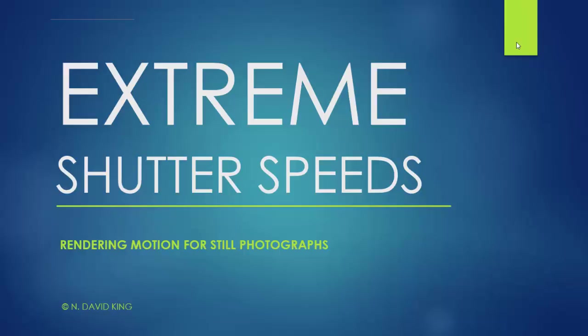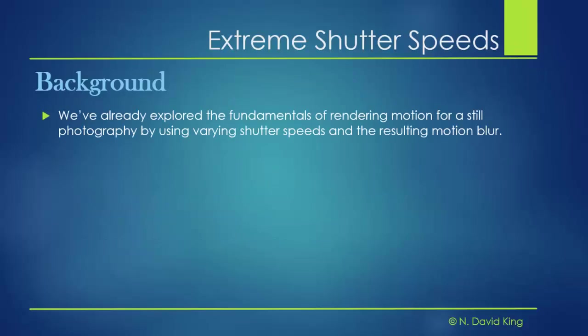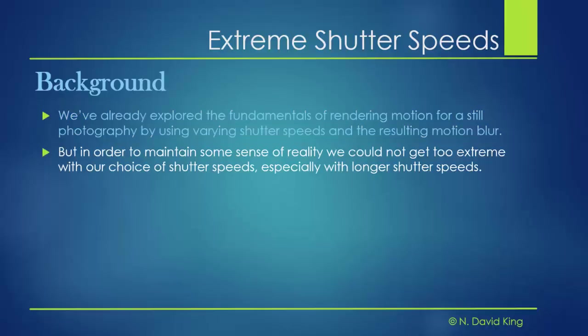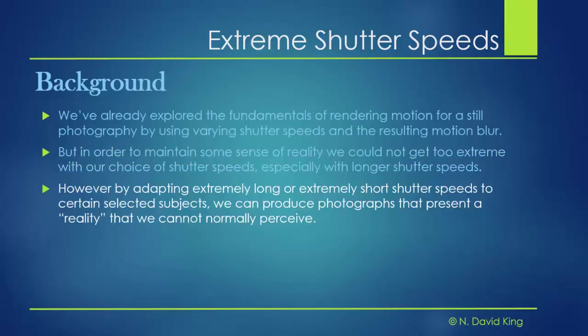This week we want to do something a little differently. We know the fundamentals — we've dealt with that already. But what happens if we carry things a little further? If we wanted to maintain some sense of reality we couldn't get too extreme, because if we used too long a shutter speed we got a blur that just blurred everything and you couldn't tell what the item was. However, sometimes if we adopt an extremely long or an extremely short shutter speed with the right subject, we can produce photographs that show a view of reality that we humans can't normally perceive — and that can be pretty exciting.